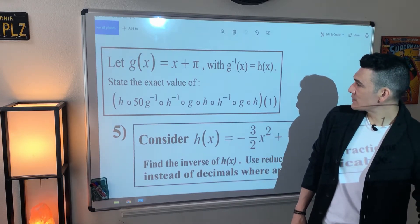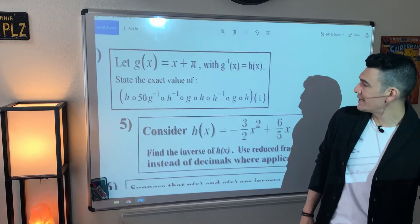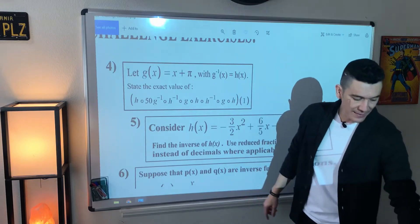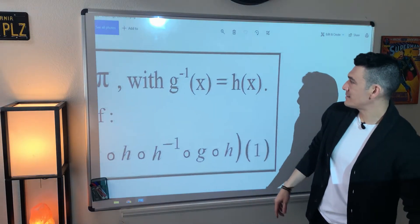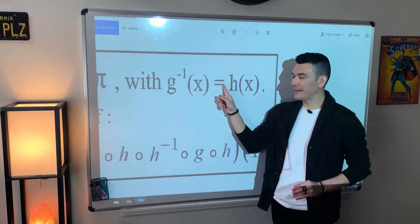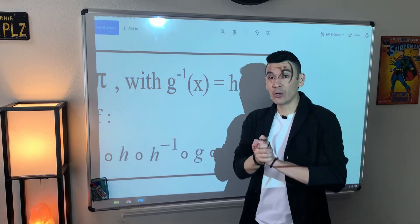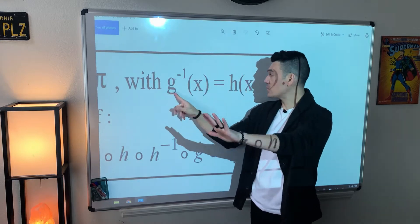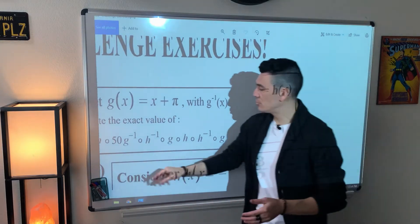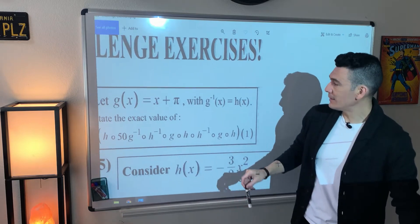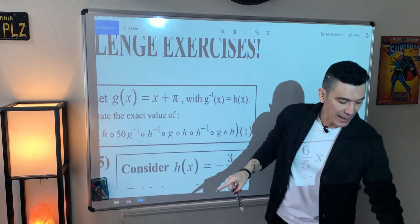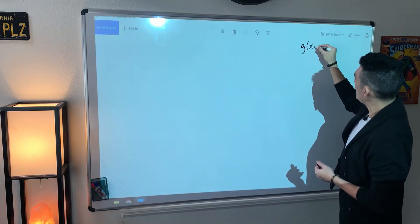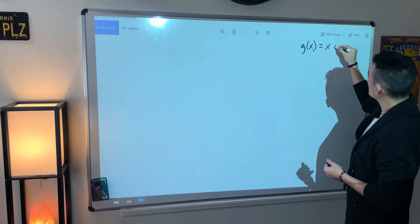So let's see what's going to happen here. What are they telling us for number four? Let g(x) equal this with g inverse. Check this out. They are telling us that the inverse of g should be called h. Let's do that real quick. Let's find the inverse of g and whatever that equation is, we're going to call it h. So what exactly is g? The equation for g is x plus π. So let's establish that real quick. g(x) is x + π.